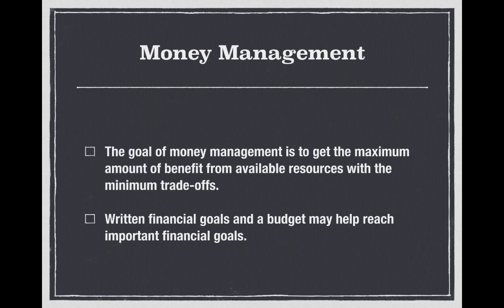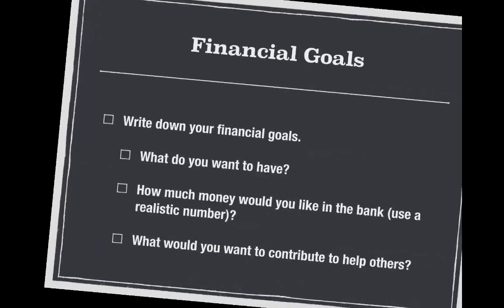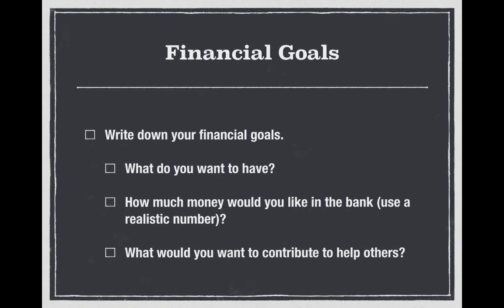Write down what you want — you should write down your financial goals. What do you want to have, and when would you want to have it? How long are you giving yourself? It's not really a goal if it doesn't have a deadline. How much money would you like in the bank? Use a realistic number. Sure, we'd all like a trillion dollars, but we're not going to get that. Based on your income, pick a realistic amount of money that you might save up in a given period of time, say three months or a year.